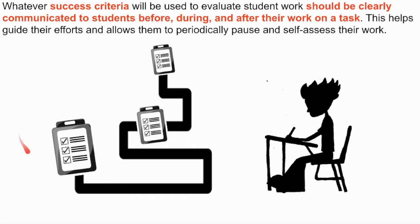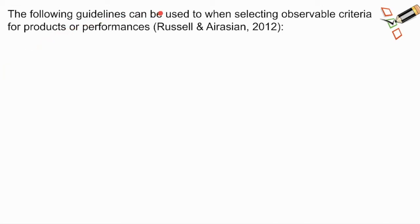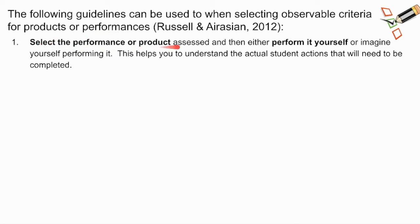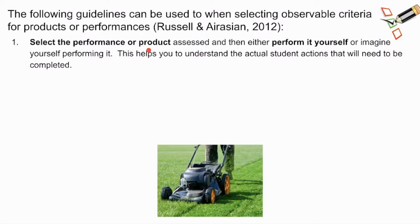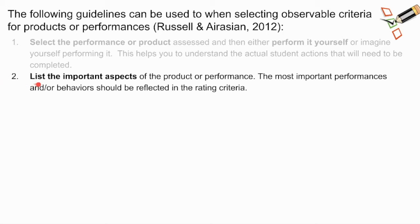So how do we help ensure that we come up with clear and effective success criteria? Here are some guidelines for selecting observable criteria for products, performances, and other assessments. Step one is to select the performance or product assessed and then either perform it yourself or imagine yourself performing it. This helps us as a teacher understand the actual student actions that will need to be completed. For example, let's look at a performance outside of school: early in the summer I've asked one of my sons to cut the grass. By physically performing the task myself, I can start identifying each of the steps or actions that need to be completed and the important aspects of what I want my sons to do.